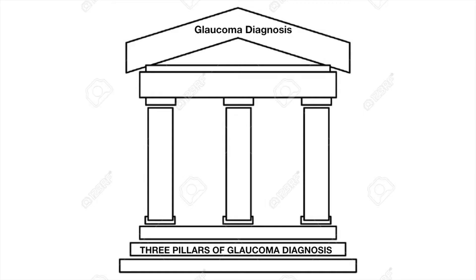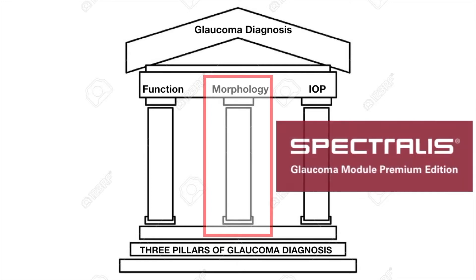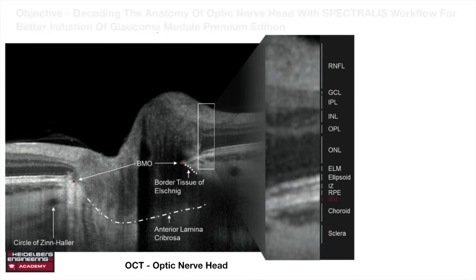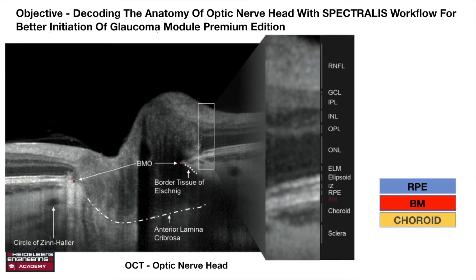The three pillars of glaucoma diagnosis are function, morphology, and intraocular pressure. This video theater focuses on morphometric assessment of the optic nerve head. It has been created with the Spectralis workflow for better initiation of the Glaucoma Module Premium Edition. Box diagrams will be used for the majority of slides, as seen on the right lower corner, to reorient the anatomical locations.